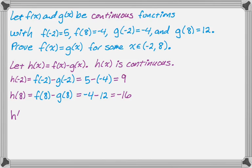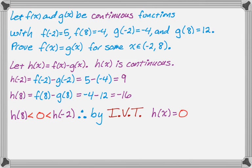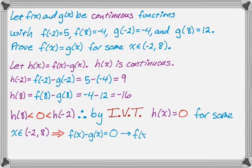So, now the intermediate value theorem kind of comes in. So, h(8) is less than 0, which is less than h(-2). So, it might not be obvious what I'm doing, but when you see this argument, you're going to want to kind of take it to heart and be able to use it again, because it comes up sometimes, even on the AP calculus exam, it comes up from time to time. So, h(8) is less than 0 is less than h(-2). Therefore, by IVT, so there's where the intermediate value theorem comes in, h(x) must be equal to 0 for some x on the open interval between -2 and 8, which is good, because if that's the case, I know that f(x) minus g(x) must be equal to 0, because f(x) minus g(x) is h(x). And if that's the case, I know that f(x) equals g(x) just by adding g(x) to both sides for some x between -2 and 8, which is what I was trying to prove.